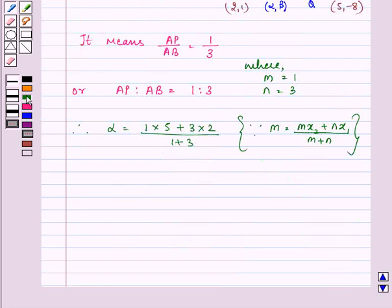On solving, we have the value of alpha as 5 plus 6 upon 4, that is equal to 11 by 4.